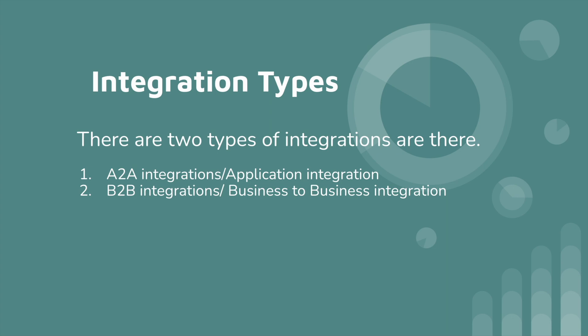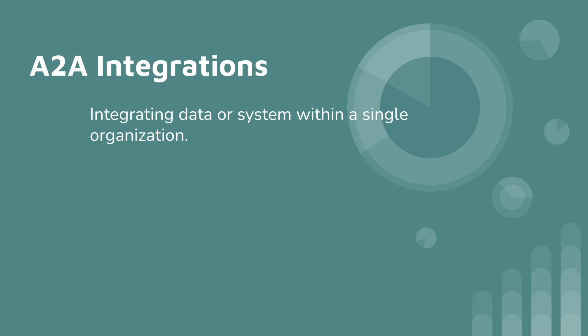There are two types of integrations in Boomi: A2A integration, or Application to Application integration, and B2B integration, or Business to Business integration. A2A integration means integrating data or systems within a single organization — transferring data between two applications like NetSuite to Salesforce, Salesforce to database, or database to SuccessFactors. These kinds of integrations are called A2A integrations.